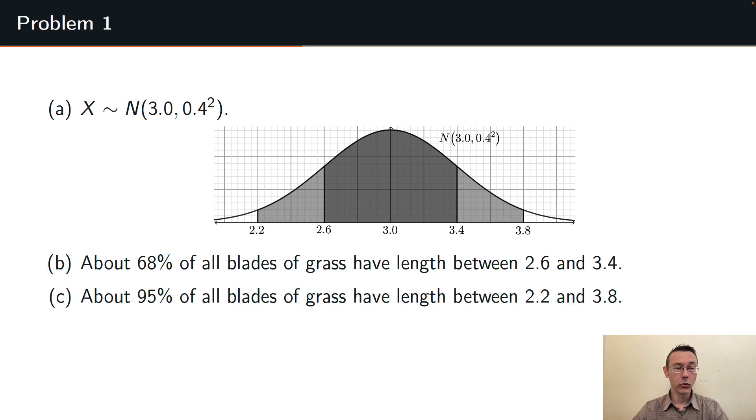Similarly according to the empirical rule, about 95% of all probability lies within two standard deviations of the mean. So about 95% of blades of grass have lengths between 2.2 and 3.8 inches.